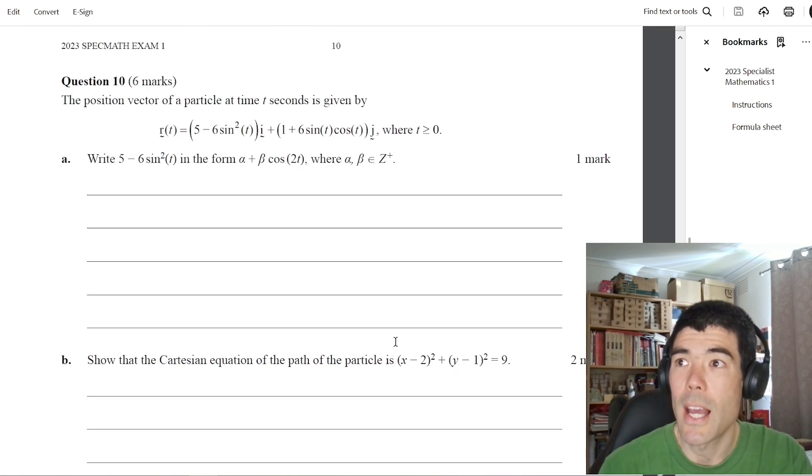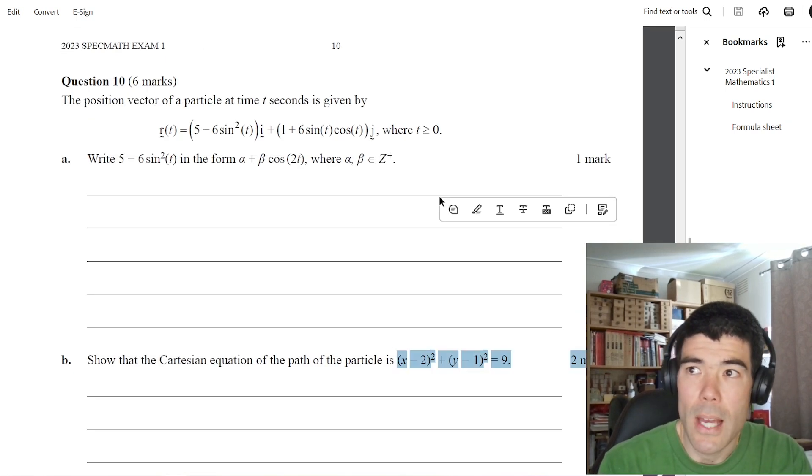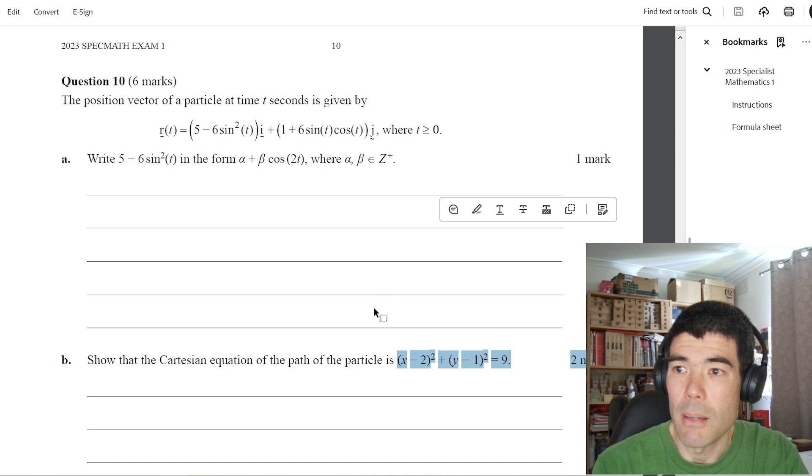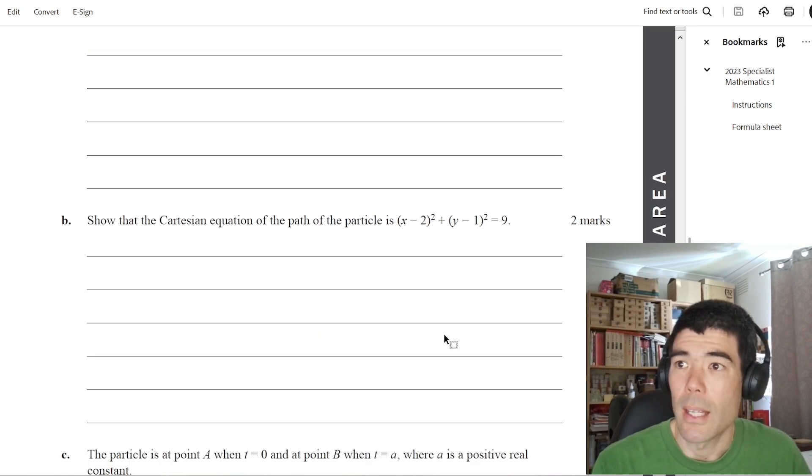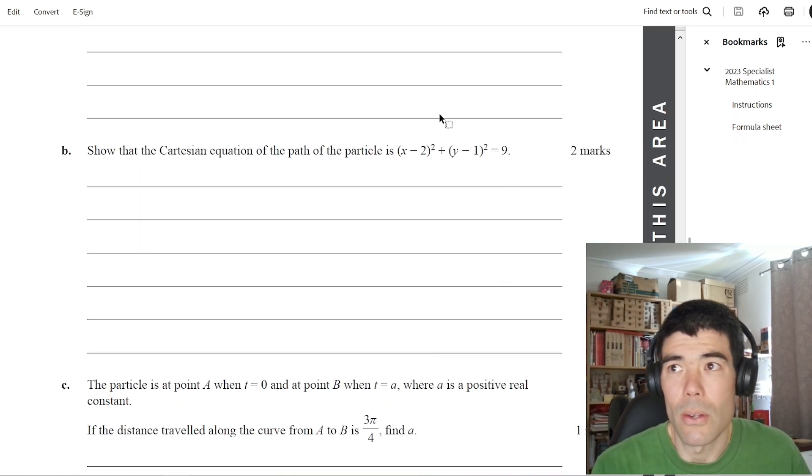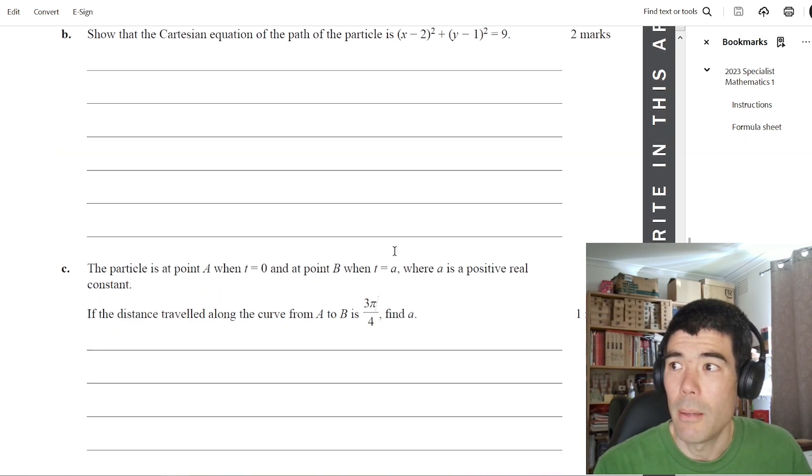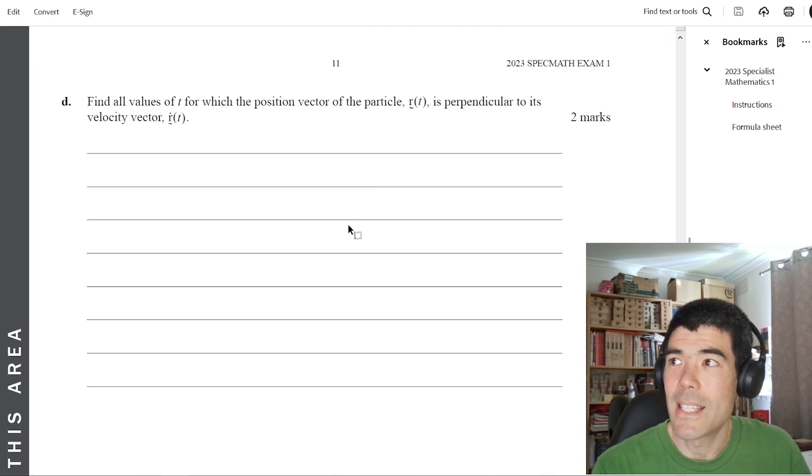Question ten is a vector calculus question. This is more of a standard question we've seen for years. Find the Cartesian equation and then an arc length. But it's a circle, so you don't really need the arc length formula. It's more just the circumference of a circle formula. And part D, this question about the position being perpendicular to its velocity, sort of turns into a bit of an algebra trigonometry question.